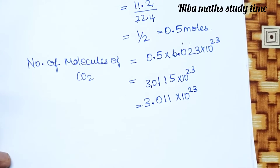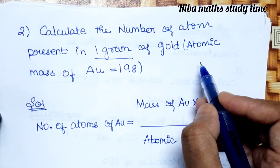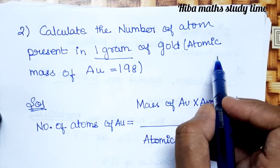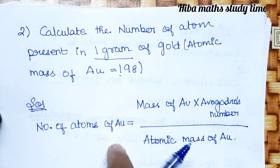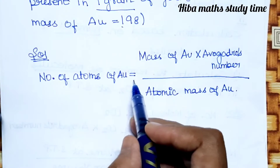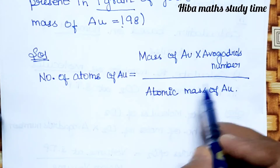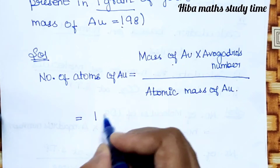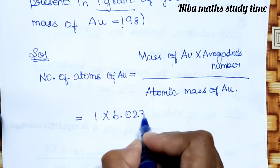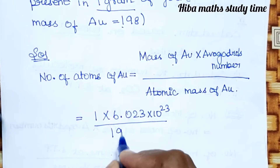Second question: calculate the number of atoms present in 1 gram of gold. The atomic mass of gold is 198. The formula is: number of atoms of gold is equal to mass of gold (1 gram) into Avogadro's number, divided by atomic mass of Au (198).